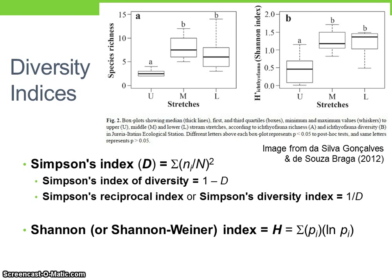One common index is Simpson's index, which is often referred to as capital D in equations. Simpson's index is calculated as the sum of lowercase n — the number of individuals of species i — divided by uppercase N, the total number of individuals of all species, across all species in the community. Simpson's index ranges between 0 and 1, and as both species richness and evenness increase, the value approaches 0. Simpson's index of diversity is calculated as 1 minus Simpson's index, and the greater the value of Simpson's index, the lower the diversity.